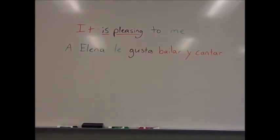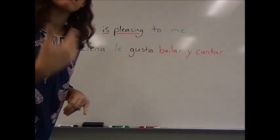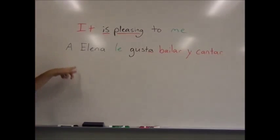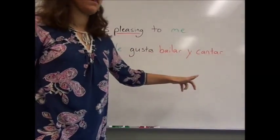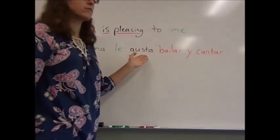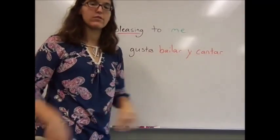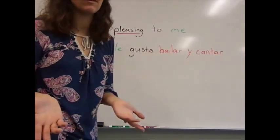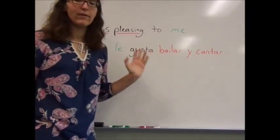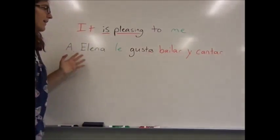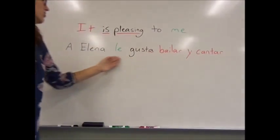Now we're back on this side of the board. And I wrote up an example for you of a sentence that contains verbs. Here we have Elena. A Elena le gusta bailar y cantar. There's a lot of verbs in that sentence. There's gustar, which is conjugated. But there's also bailar y cantar, which are both infinitives, unconjugated verbs, that don't have a subject attached to them. In this case, what this sentence is saying is that the act of dancing and singing is pleasing to Elena.